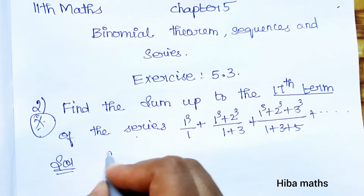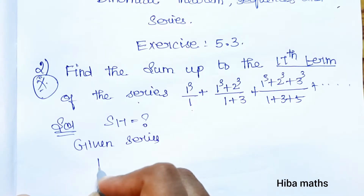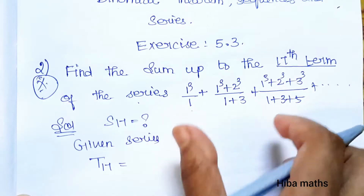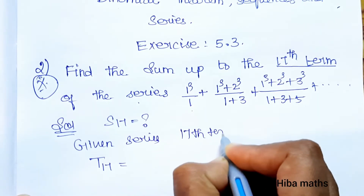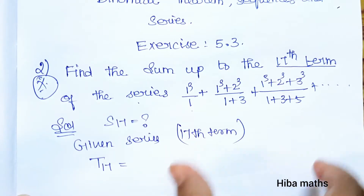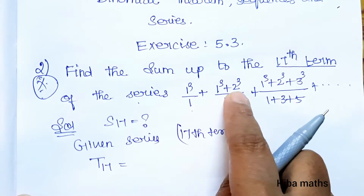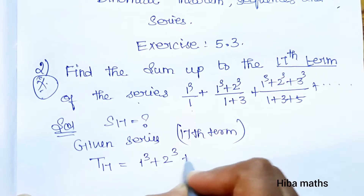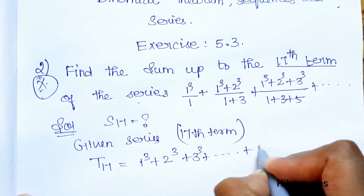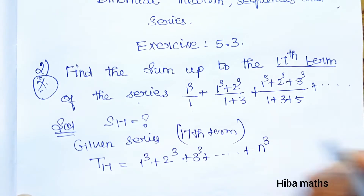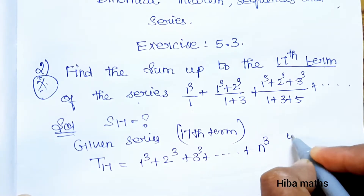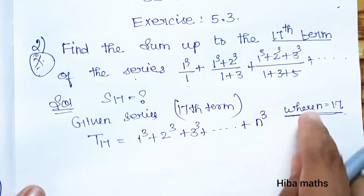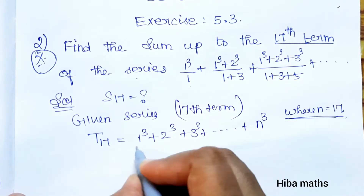We need to find S of 17, the sum up to the 17th term. The given series has first term 1 cube, second term 2 cube — so the numerator is 1³ + 2³ + 3³ + ... up to 17³, that is the sum of n cubes, where n is equal to 17.